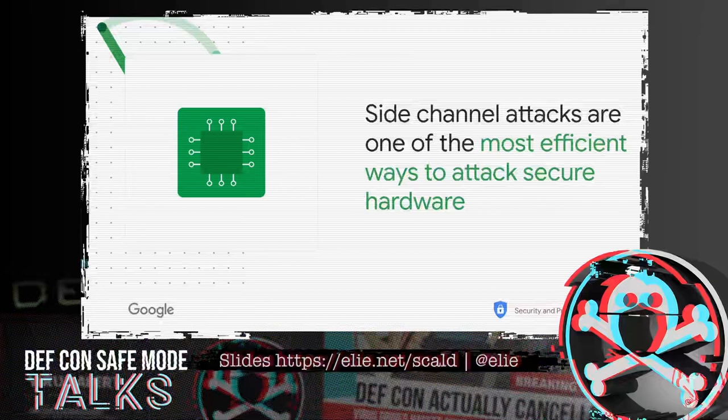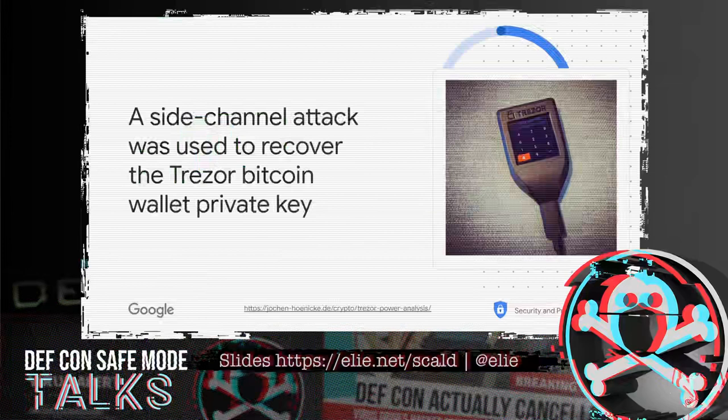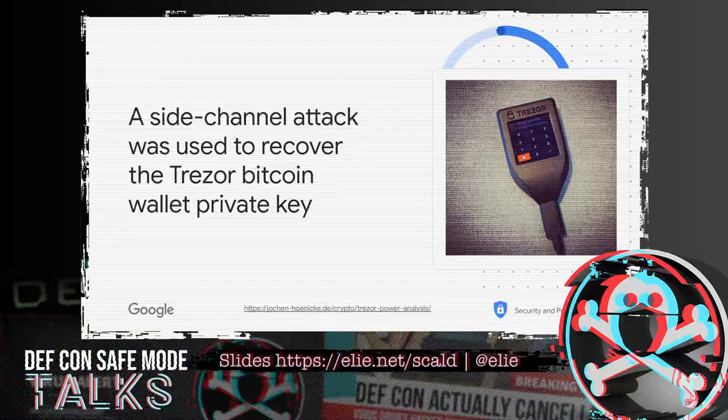Here is a concrete example to show you how powerful such attacks are. Back in 2017, researchers were able to recover Bitcoin private keys out of a Trezor hardware wallet by using such an attack. They showed that despite the algorithm being well reviewed and the hardware being well understood, the interplay between the two still had problems that you can exploit through side-channel attacks.